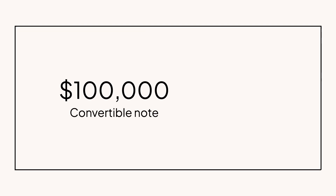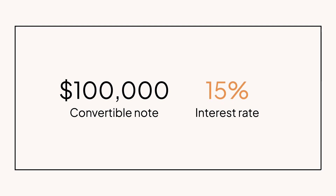Here's a simplified example to help you learn the basics of a convertible note — and we always recommend talking with your legal team to understand the specifics of your situation. Let's say an investor gives you $100,000 on a convertible note. That $100,000 comes with an interest rate of 15% and a maturity period of one year. So in a year, the note will mature, and at that time you'll have to pay back the original investment plus 15%.